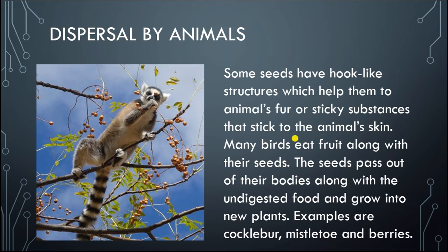These seeds pass out of the animals' bodies along with the undigested food. When they pass out from their body, they grow into new plants. Some examples are cocklebur, mistletoe, and berries.